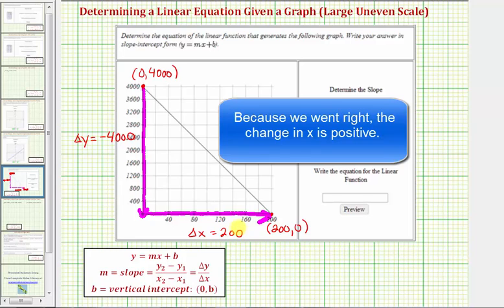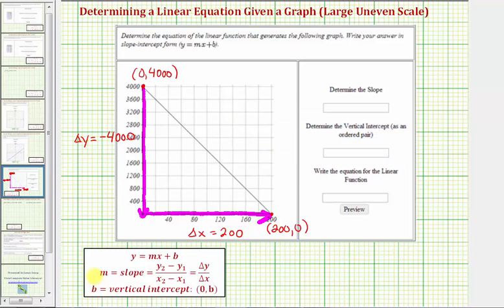Knowing this, we can now find the slope. Again, the slope is equal to the change of y divided by the change of x. So the slope m would be equal to negative 4,000 divided by 200, which is equal to negative 20. So our slope is negative 20.